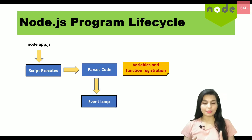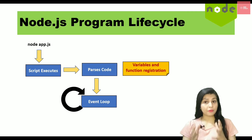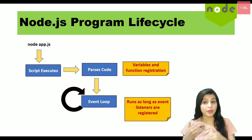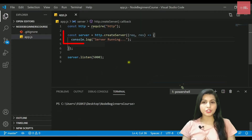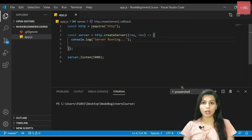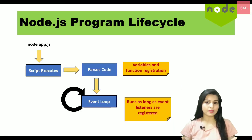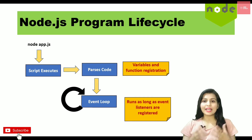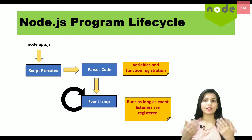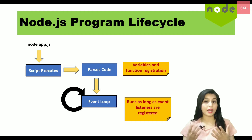The event loop is a very crucial and interesting concept in Node. It is managed by Node itself and starts executing as soon as you run the program — the moment you write 'node filename'. It runs as long as there are requests to handle. In our case, the 'createServer' function takes a request listener that keeps listening to all requests, and since requests keep coming, the loop never ends.